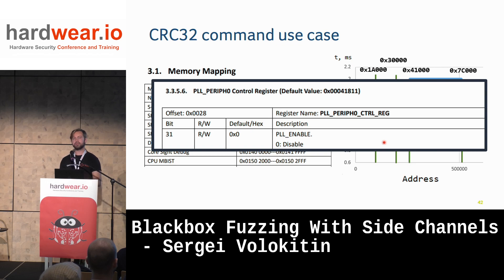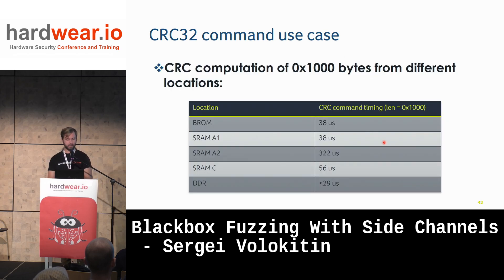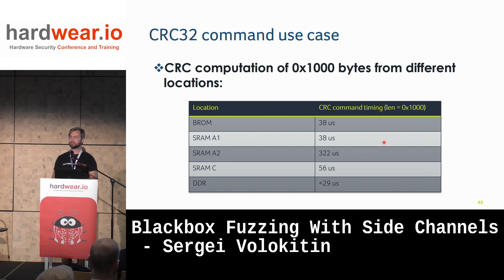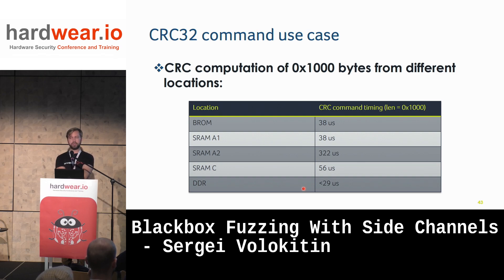We were planning to use side channels to get information about software running on the target, but we also discovered differences in actual hardware underneath — a nice bonus. Some SRAM is much faster than another SRAM; DDR is much faster than any other memory. The timing difference is quite significant, so you can reliably use timing side channel information to map out different physical memory regions — something we didn't even plan for at the start.